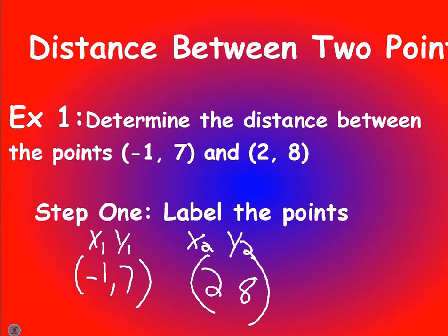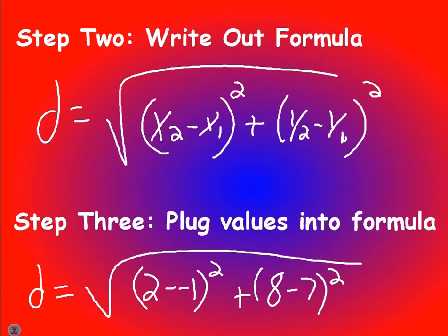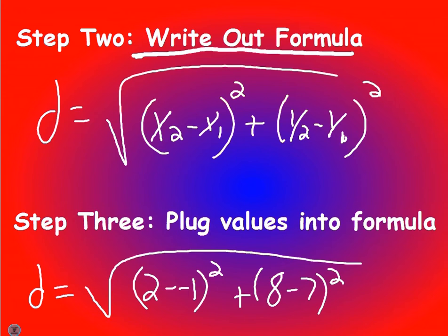Find the distance between the points (-1, 7) and (2, 8). Just like with slope, step one is to label them: for the first point, label X1, Y1; for the second point, label X2, Y2. Write the formula out. The formula is the square root of X2 minus X1 squared plus Y2 minus Y1 squared. If you can memorize the formula for the quiz, I might give you five extra credit points.